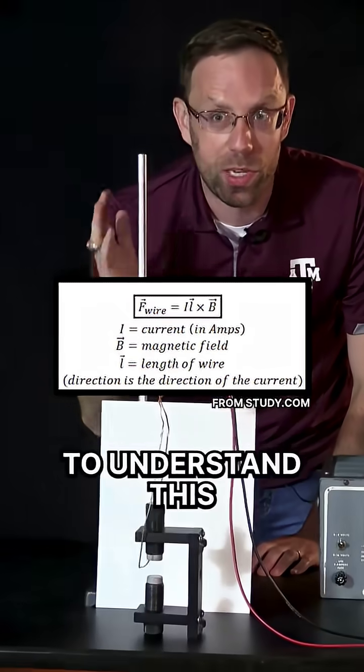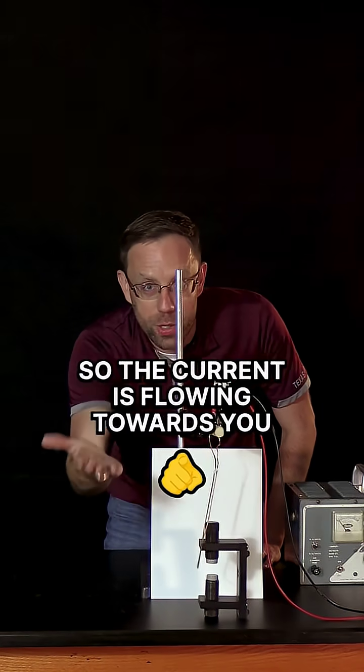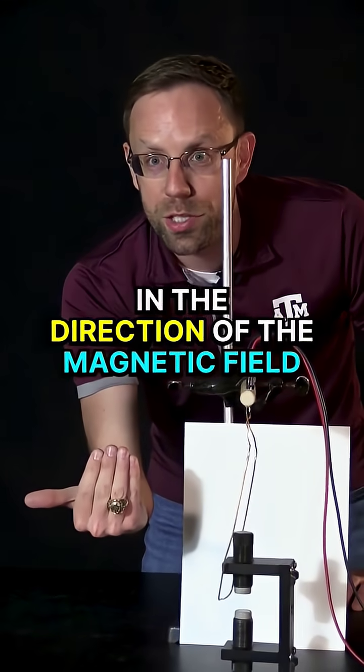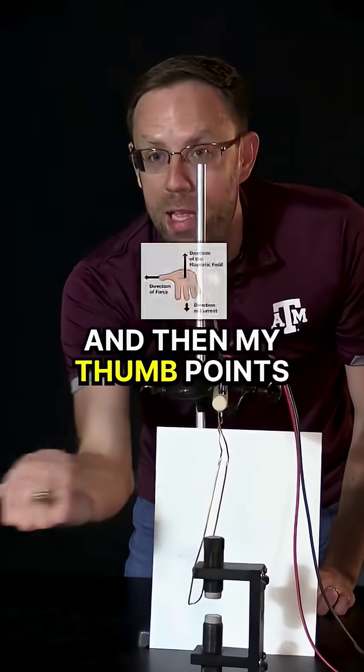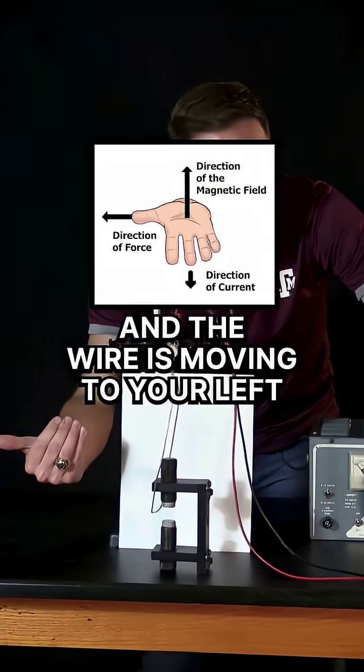Well, we have to use a right-hand rule to understand this. First, we take our hands. We put our fingers in the direction of the current. So the current is flowing towards you. I then need to curl my fingers in the direction of the magnetic field. The magnetic field is up. And then my thumb points in the direction of the force. My thumb points to your left and the wire is moving to your left.